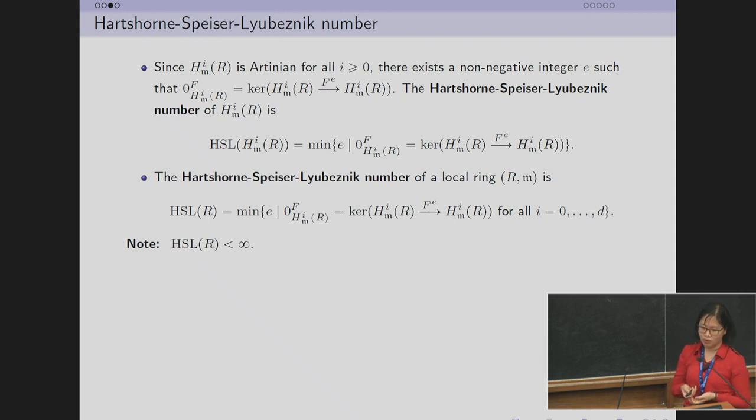As you know, our local cohomology modules with support in maximal ideal are Artinian. Then by Hassan-Spicer-Lyubeznik, there exists a non-negative integer e such that the Frobenius closure of the zero submodule of local cohomology is the kernel of F^e. The Hassan-Spicer-Lyubeznik number of the local cohomology module is the minimum e that satisfies this condition. We have the Hassan-Spicer-Lyubeznik number of the ring is finite for all i from 0 to d.